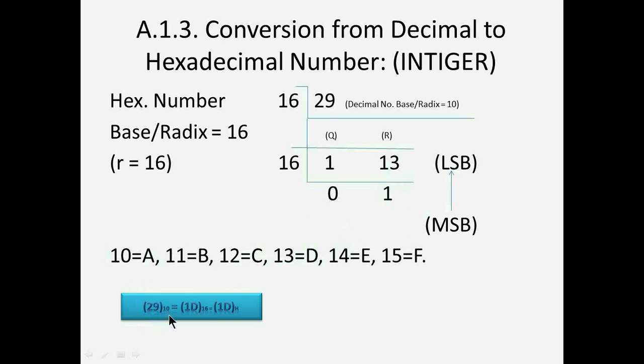That is hex equivalent of decimal 29 is equal to 1D base 16 or 1DH.